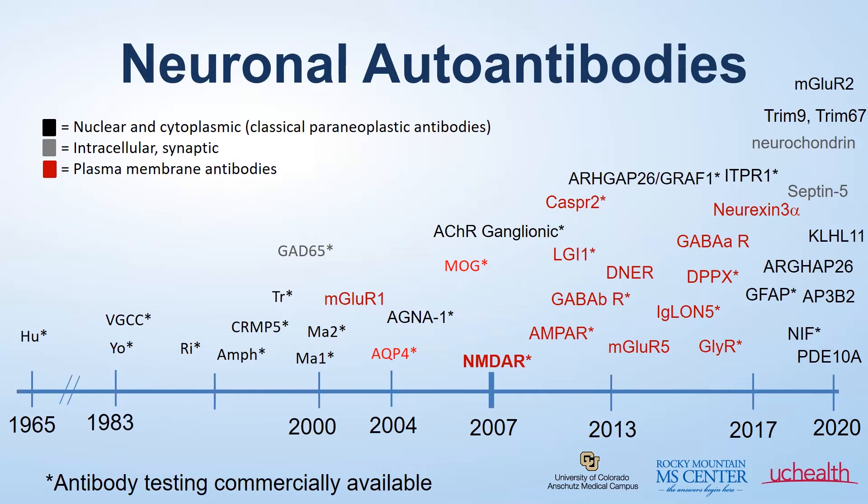The perfect example of this is NMDA receptor encephalitis. In other circumstances, we know the antibody serves as a biomarker or evidence of an autoimmune disease, but the exact mechanism of how the brain inflammation occurs remains unknown.